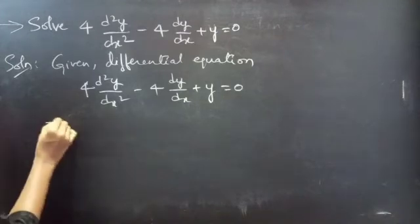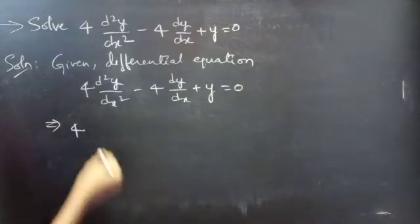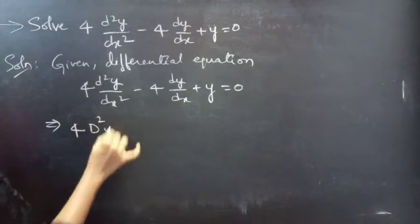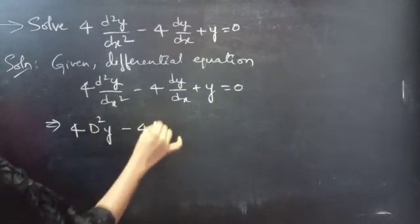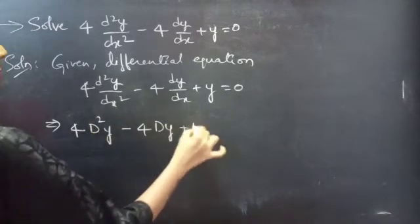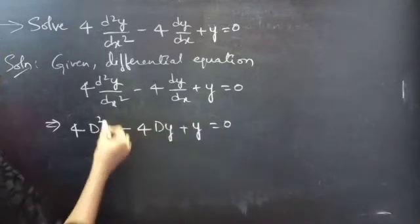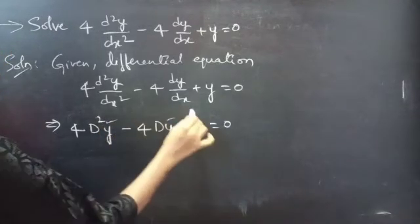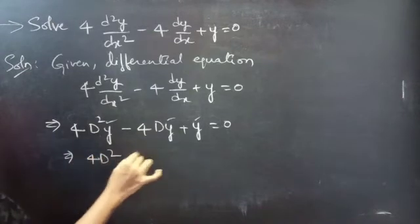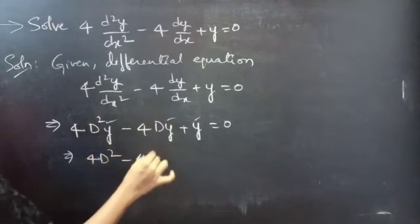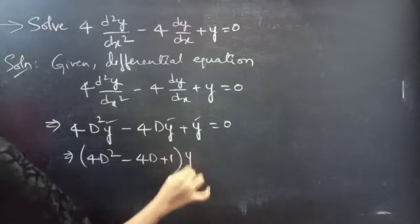We have an equation in operator form — differential operator form. We write 4D²y minus 4Dy plus y equals to 0. Now, take y common from all three terms. Then you will get 4D² minus 4D plus 1, into y, equals to 0.